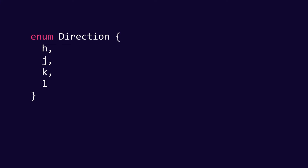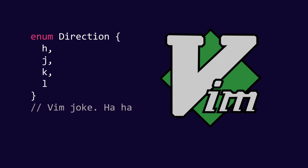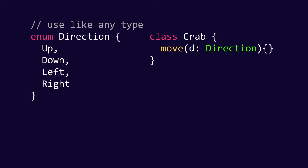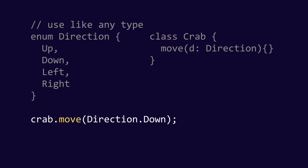For instance, Direction: Up, Down, Left, and Right — and you can use it like any other type. So we say that we have a crab and then we want to move it in a direction. We could use that enum to represent that direction. So we can do crab.move(Direction.Down).